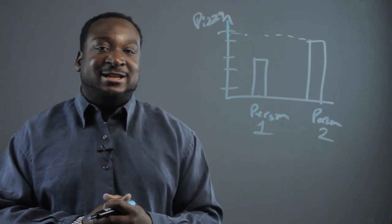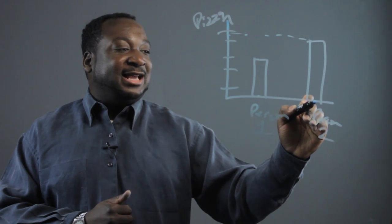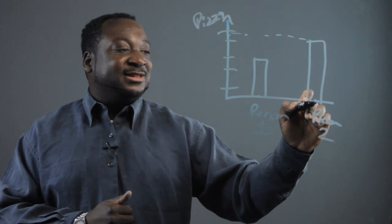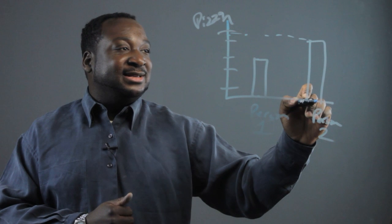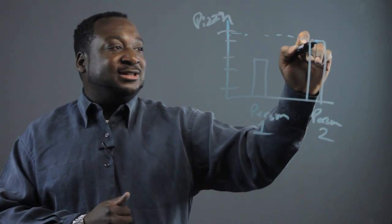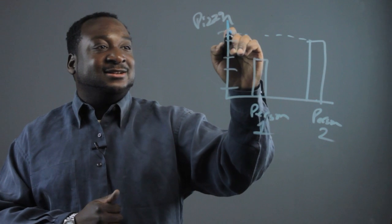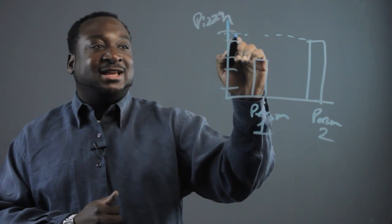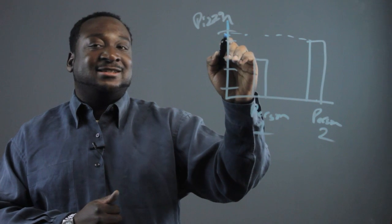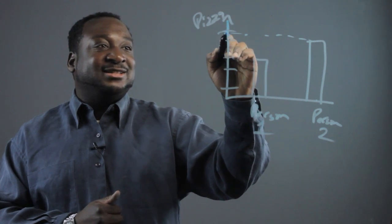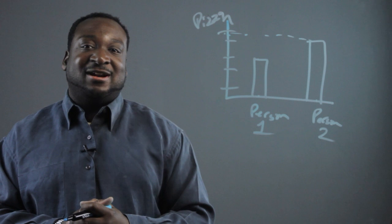And that's how you would read a bar graph. Look at the person on the horizontal axis and just go up to the top of its bar and see where that lands on the vertical axis. That gives you the number of units — in this case, the number of pizza slices they've eaten. And that's how you read a bar graph.